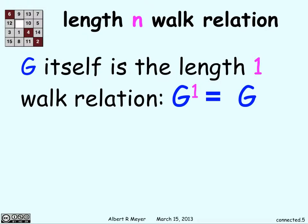And G itself, when you think about it, is a length 1 walk relation. The graphs define these relations and there's an edge from one vertex to another if there's a length 1 edge from one vertex to another.